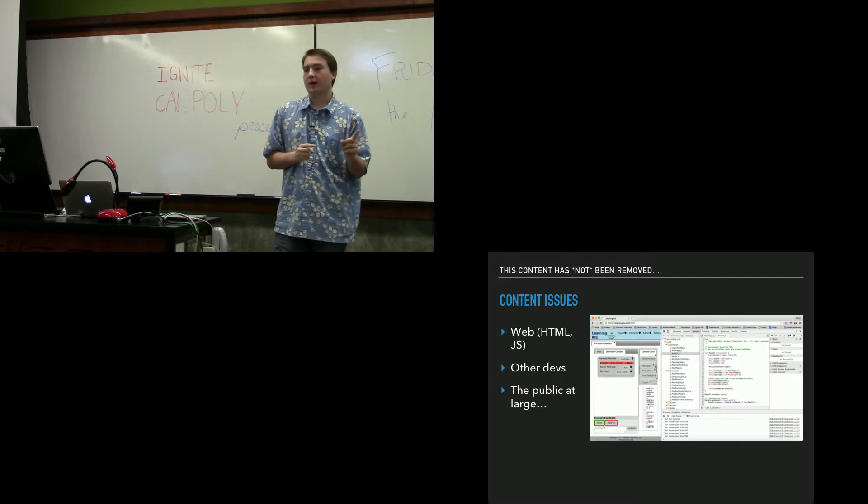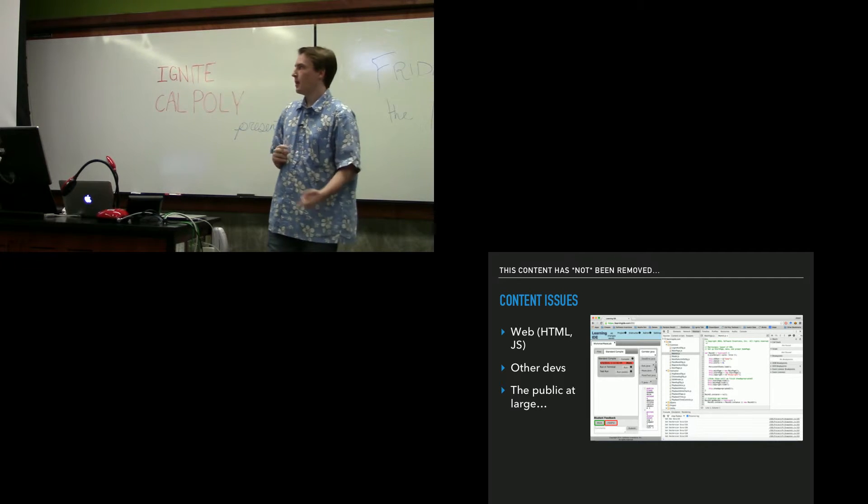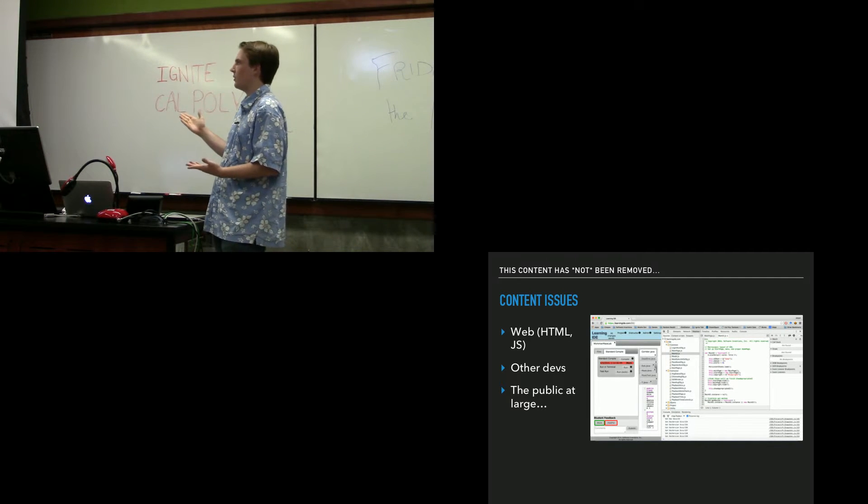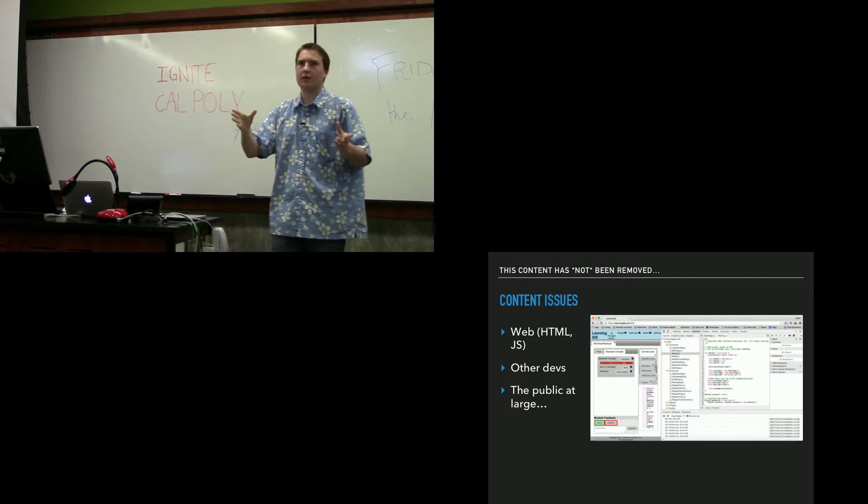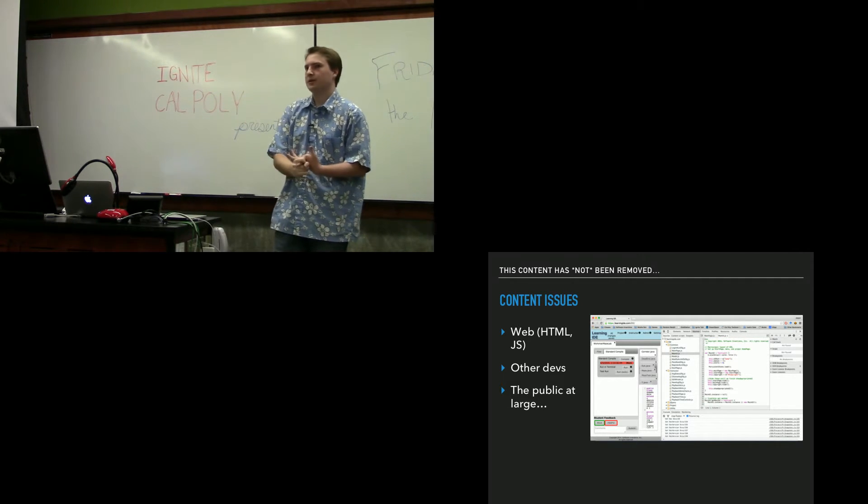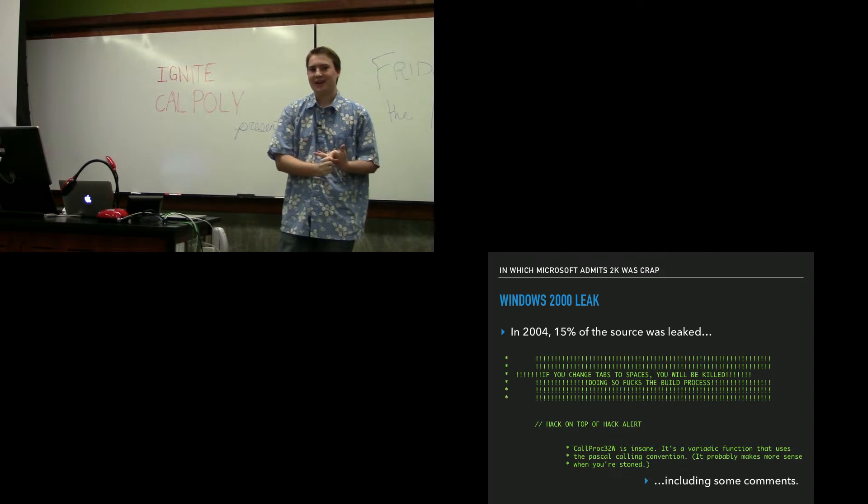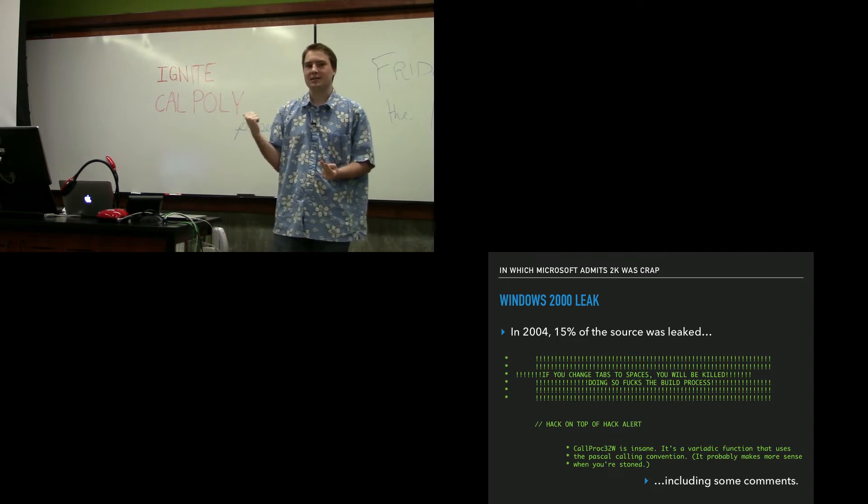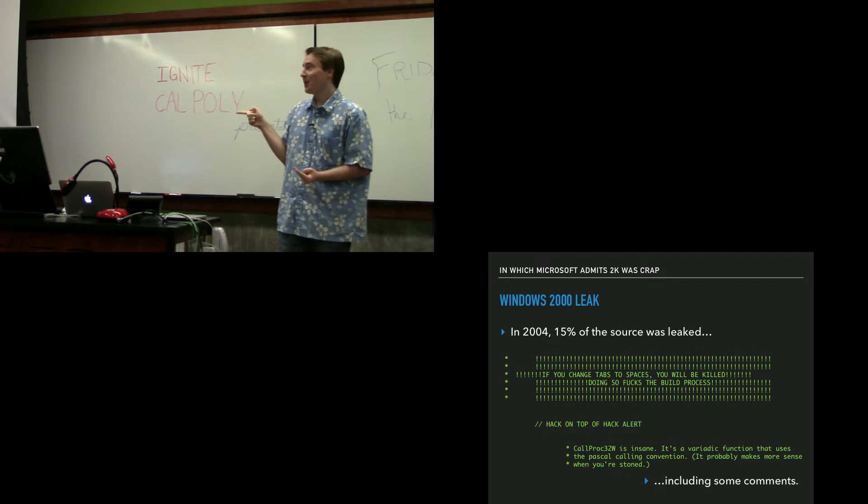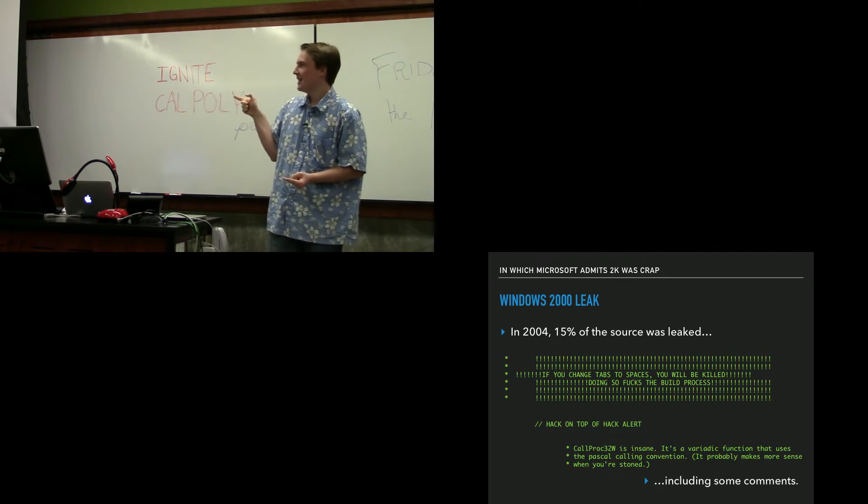Now there are issues with the content of comments. So comments are publicly available on any web page. You can see the code that runs the web page, you can see all the comments, because JavaScript is publicly available. It's not compiled, it's right there if you look at it. Other developers might see your code, the public might see your code. In this case, the Microsoft source code for Windows 2000 was leaked in 2004. These are actual comments from Microsoft programmers that the world was not supposed to see, but are hilarious.